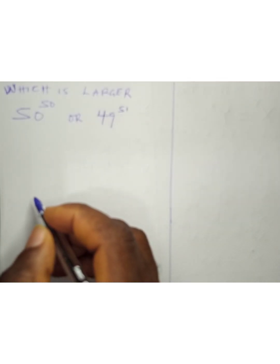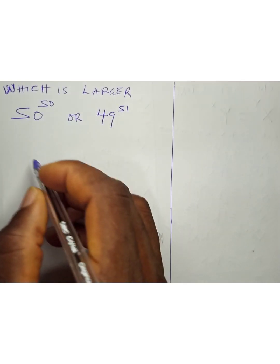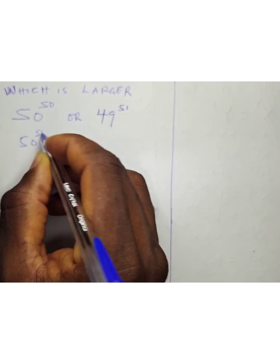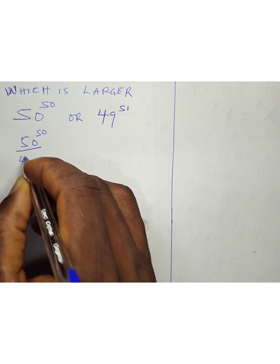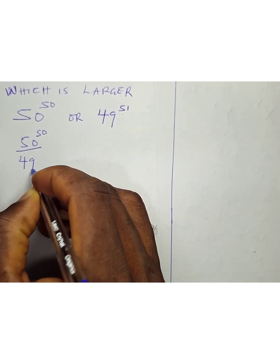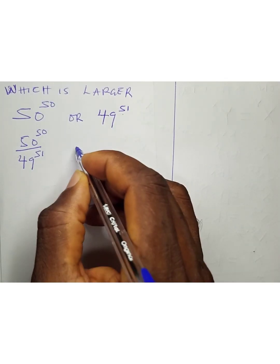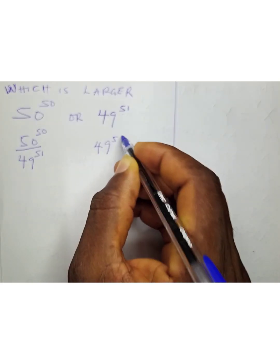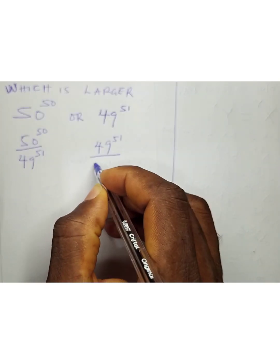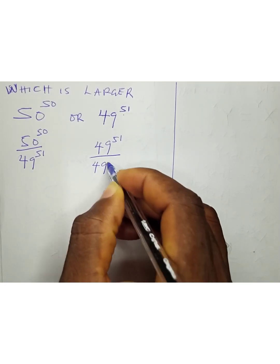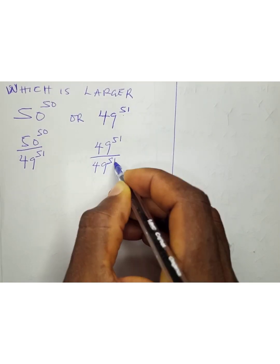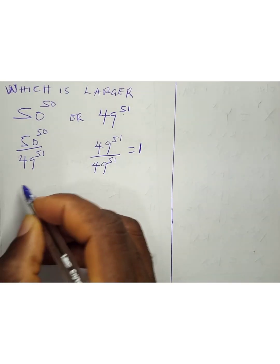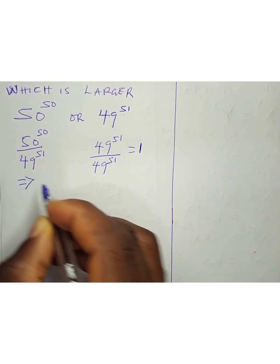So we're going to have 50 to the power of 50 divided by 49 to the power of 49, and on the other side we have 49 to the power of 51 divided by 49 to the power of 51, which equals 1.